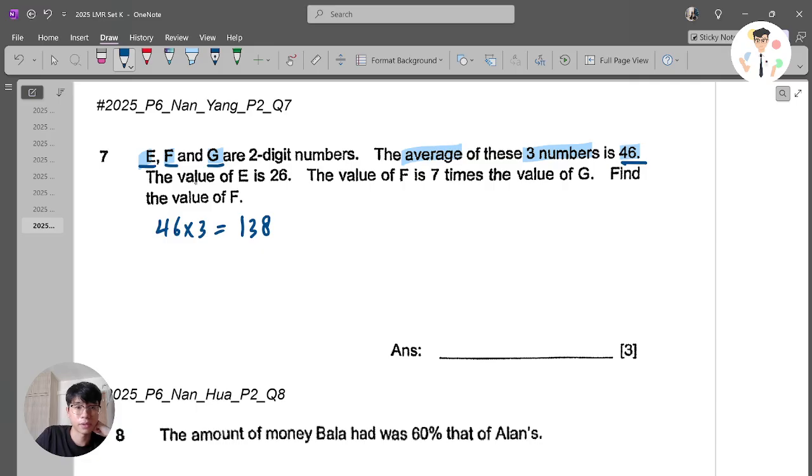But the question says the value of E is actually 26. So I know this is 26. And the value of F is 7 times the value of G. Means that this is 7 units and this is 1 unit. So what I will do is, I will use 138 minus 26, which means that will be 112. And this belongs to F and G add together. F is 7 units, G is 1 unit. So add together is 8 units.